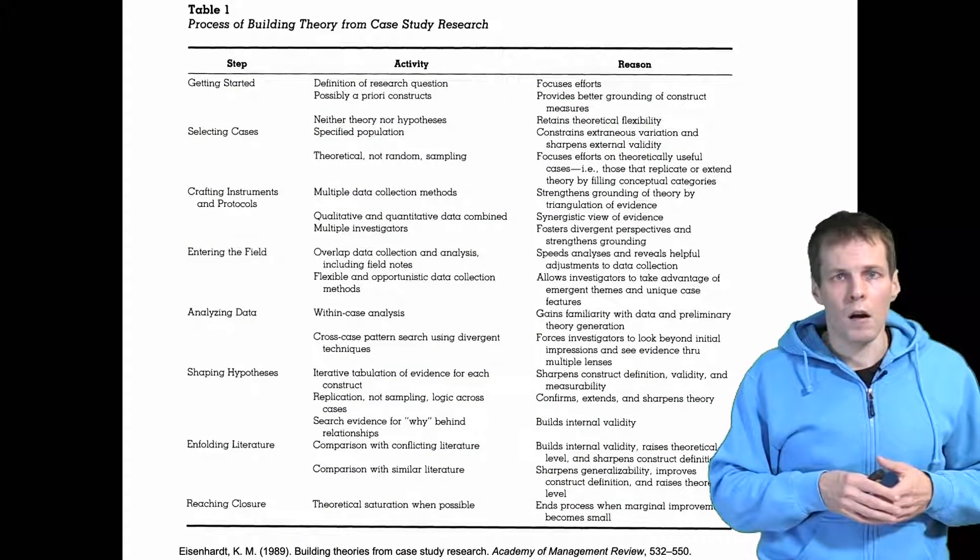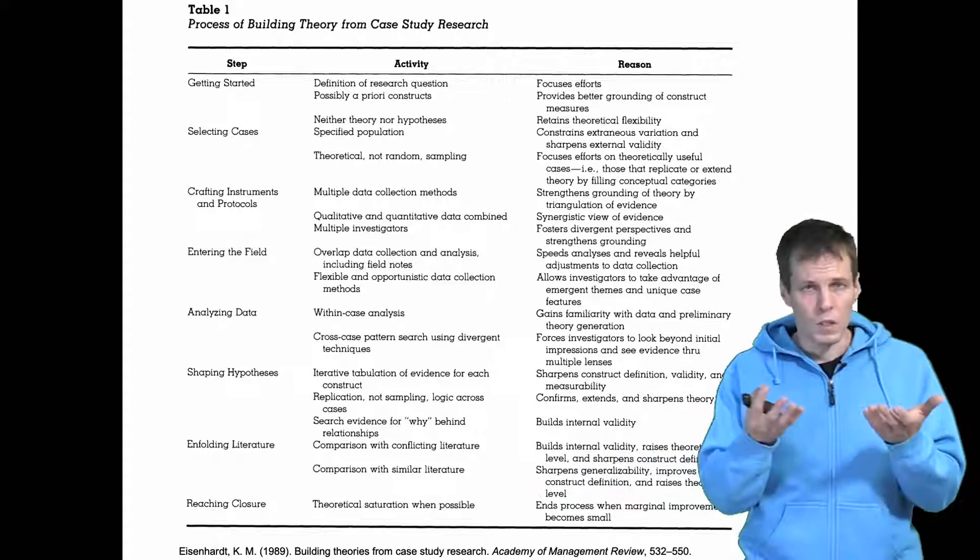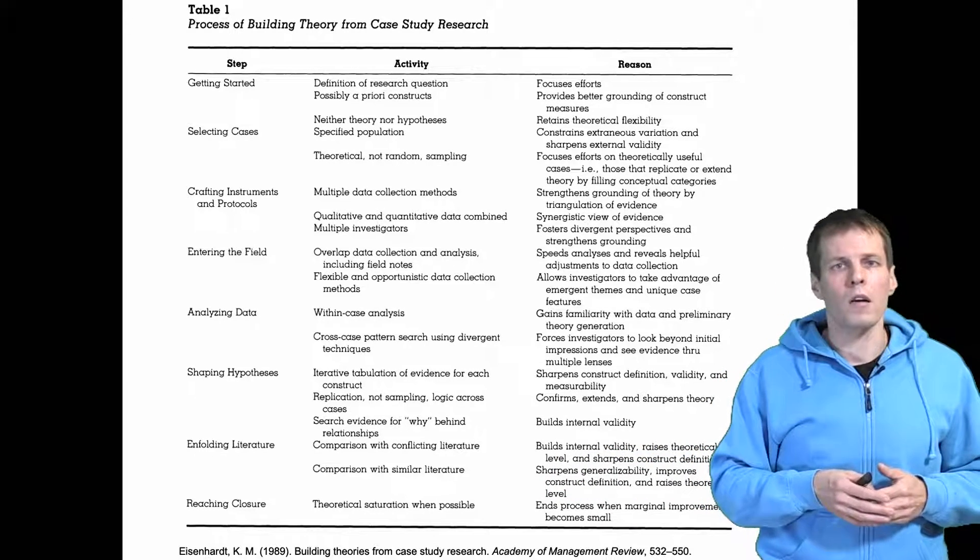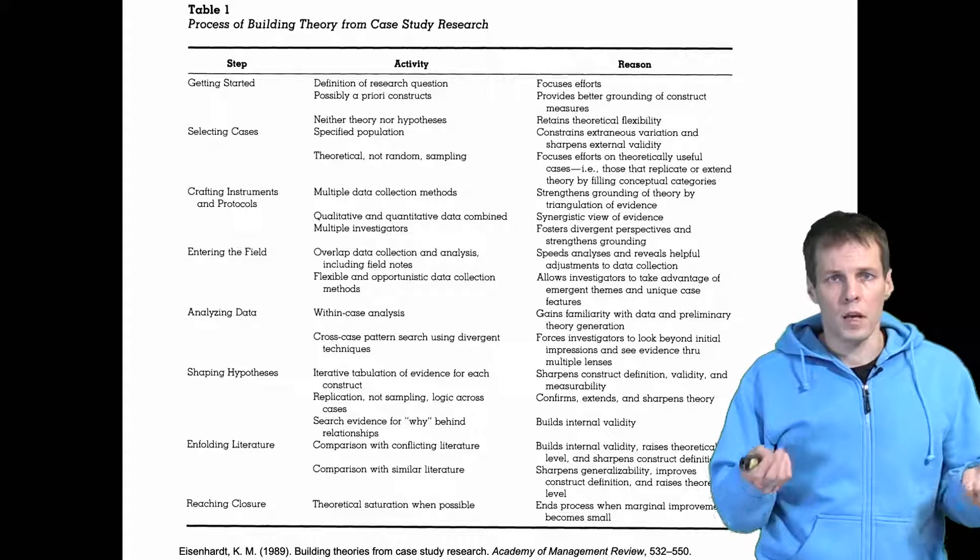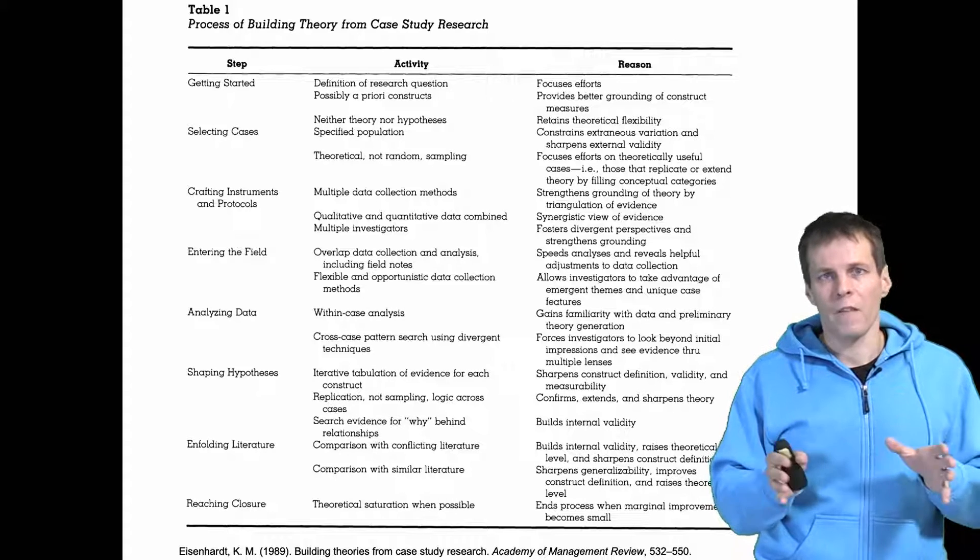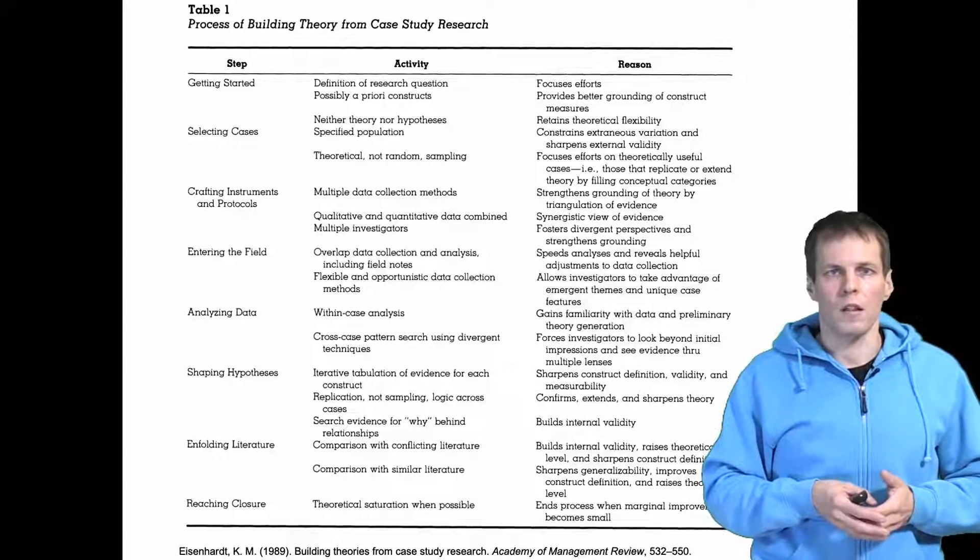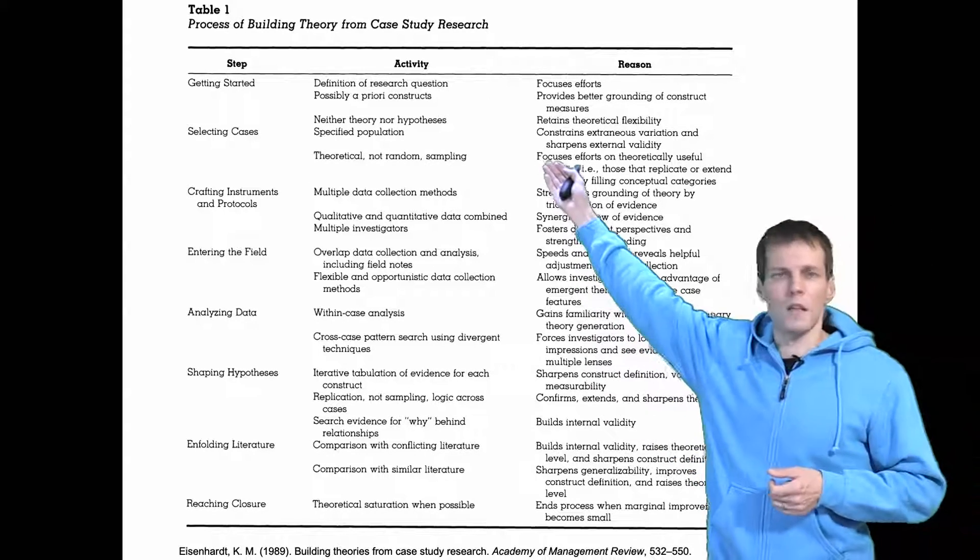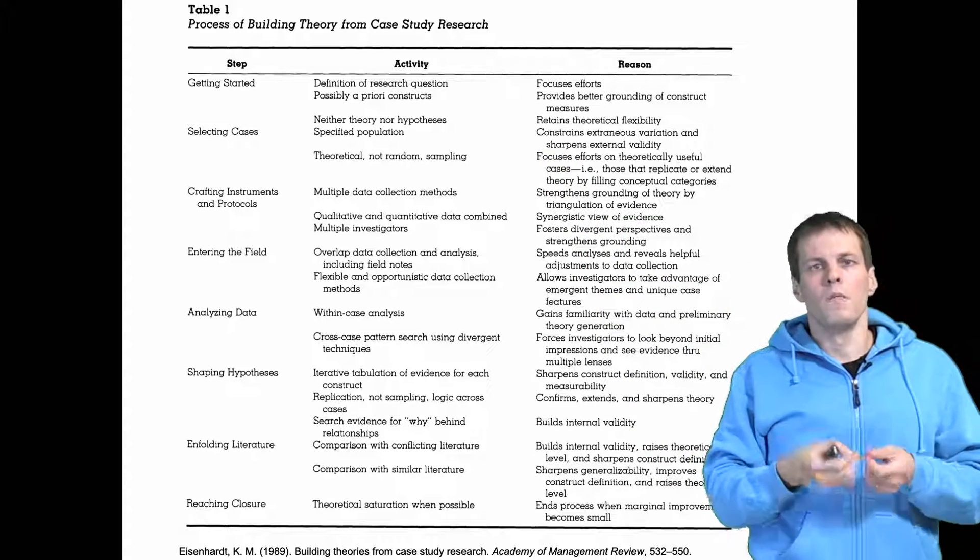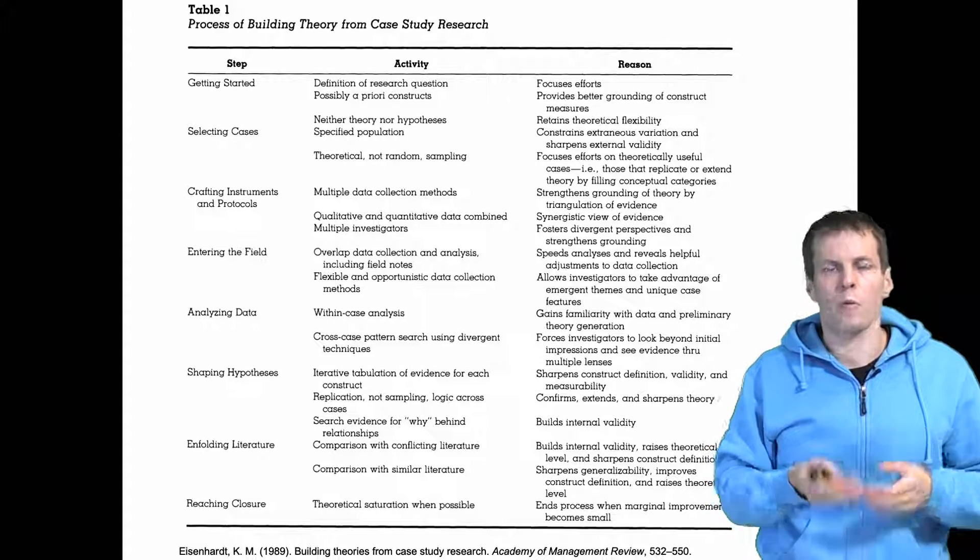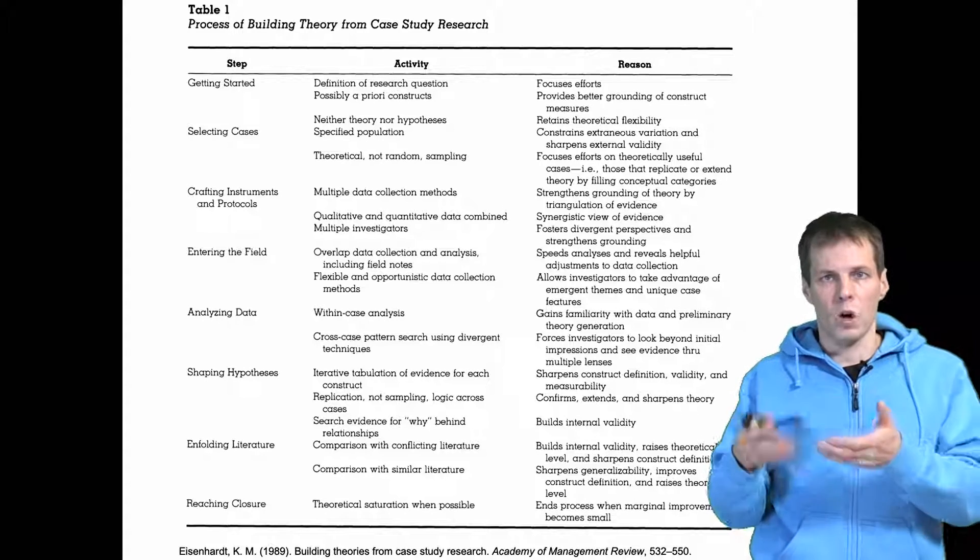This is how Eisenhardt herself describes the process in the seminal 1989 paper. So Eisenhardt's approach starts with a research question like we always do. In contrast to some grounded theory studies where we start from a clean slate, we don't have any ideas of what the research result might be. In Eisenhardt's approach there is quite often some concepts that have been chosen before the study that we want to study. Power, we want to study politics, so we need to code for evidence of power and evidence of politics in the data.